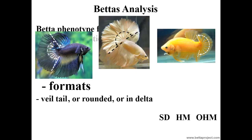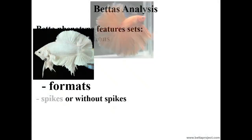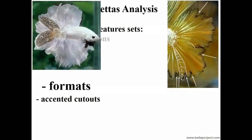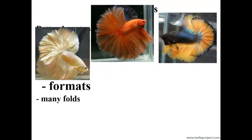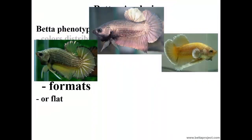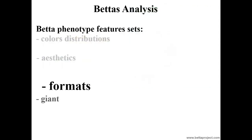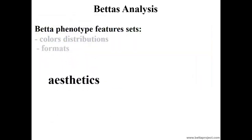The BETA may display the borders of the fins with spikes — the so-called crown tail — or without spikes. The BETA may display accented cutouts on the edges of the fins resembling a feather shape — the so-called feather tail. The BETA may present many folds in the tissue of the fins — the so-called rose tail — or may present flat tissue without any folds. The BETA may display super-developed pectoral fins compared to the remaining fins — the so-called dumbo and big ear. And finally, the BETA can be giant, with much bigger lengths than common BETAs and presenting more body mass.